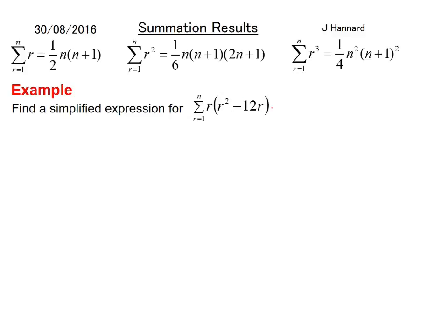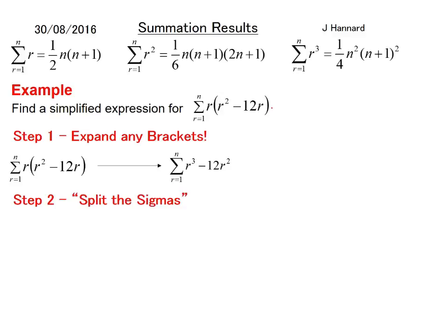The first thing we do with these is expand any brackets. It's exactly the opposite of induction—with induction we don't expand until we really need to, but with these it expands straight away. So r times r squared is r cubed, r times minus 12r is minus 12r squared. Step 2, we split the sigmas. We stick the r cubed to one sigma and r squared to another because we want to try and weasel in these standard results. We turn that into the sum of r cubed minus 12 lots of the sum of r squared. That is a move known as splitting the sigmas.